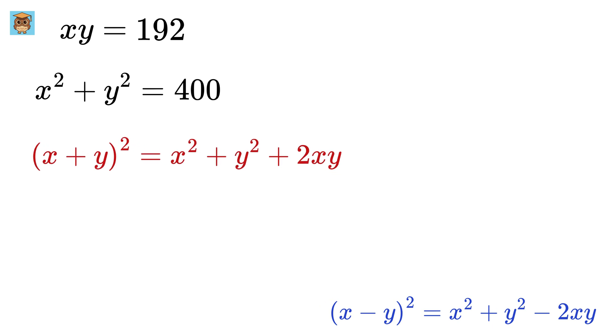First, consider this one. This is 400 and x times y is 192. So, we get x plus y whole squared equals 400 plus 2 times 192, or 784. Thus, x plus y equals the root of this, or 28.